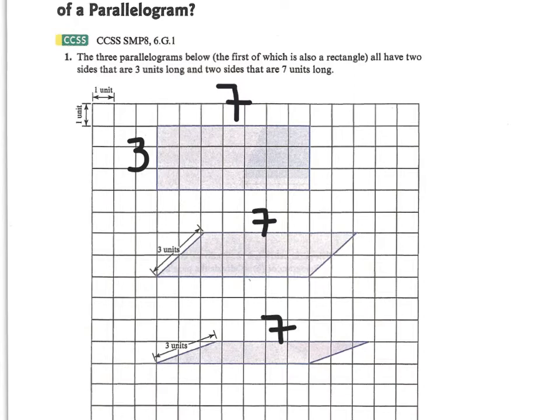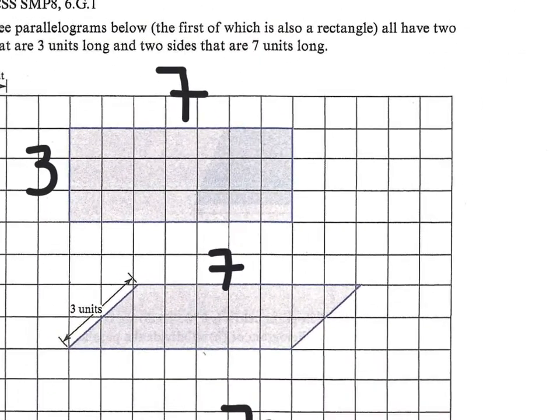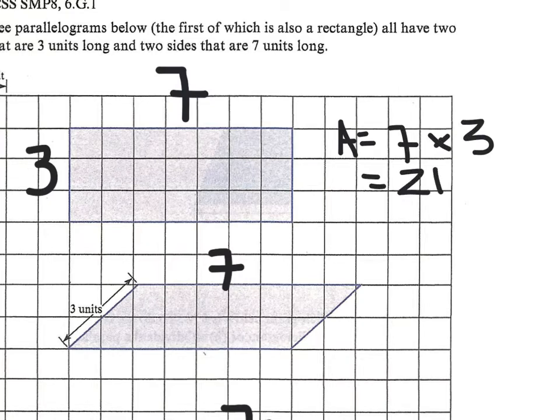When you use the moving and additivity, the first one you don't have to do that because we are a rectangle and the area is going to equal that seven units times the three units so it's going to give you 21 units squared and that's because that parallelogram is a rectangle.